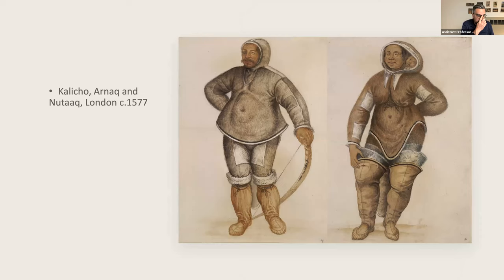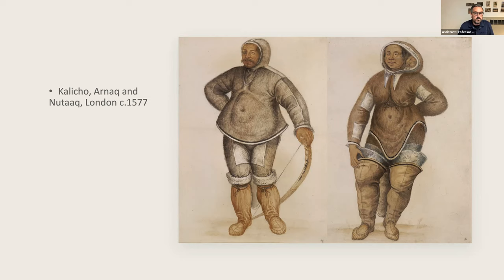A year later, Martin Frobisher brought three more Inuit against their will: a man named Calico, who died soon after arriving at Bristol; a woman named Arnok, who died days later, leaving behind her infant son Newtac, who would also die in London. Like the earlier Inuk man, he was buried at St. Olaf's. These early captives were brought to Europe as curiosities, and their bones — of little scientific interest at this stage — were collected in the undifferentiated mass of the churchyard.